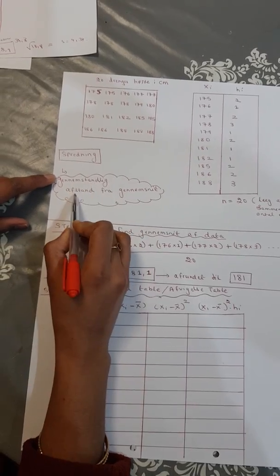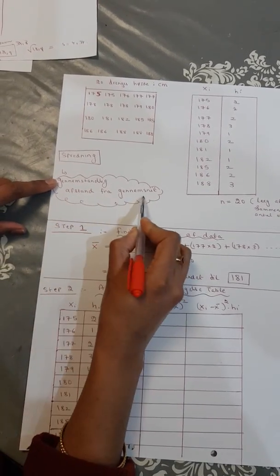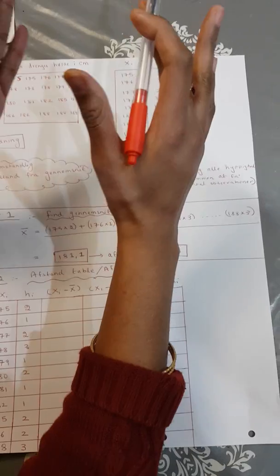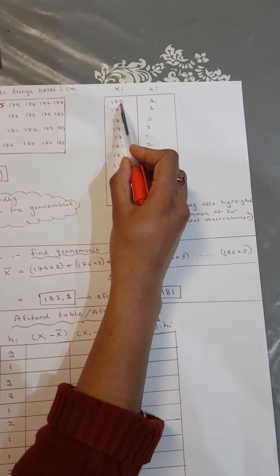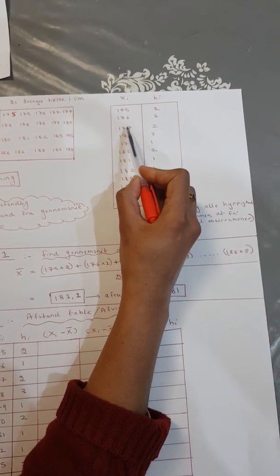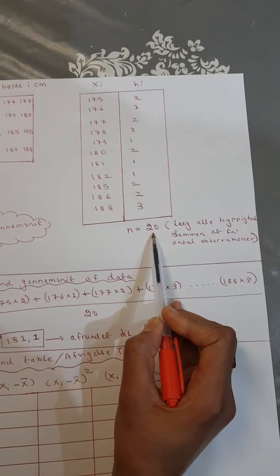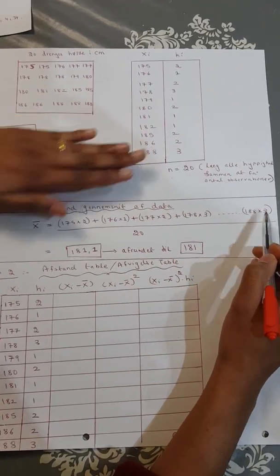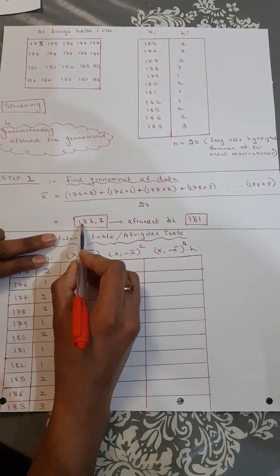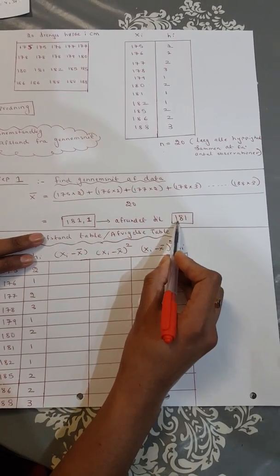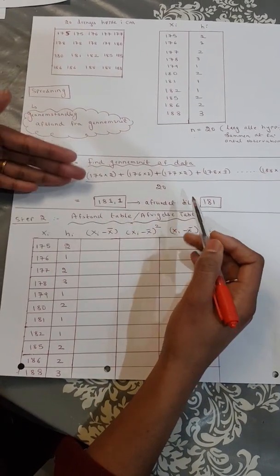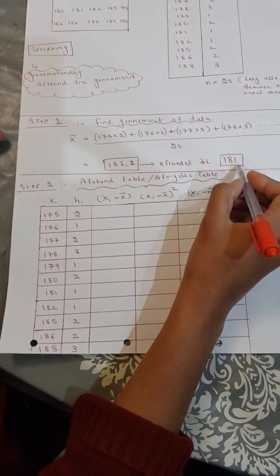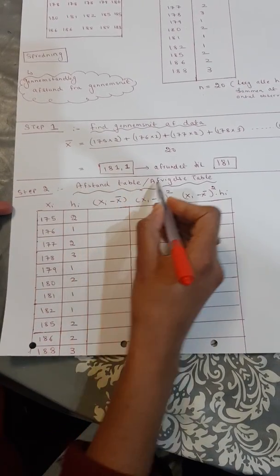So the variance measures deviation from the mean (genomsnitt). Let's see how we find the mean. The mean is X times frequency plus X times frequency, and so on. We have in total observations here. We divide by the total number of observations. So here we have the frequency table ready, and we have found the mean (genomsnitt).